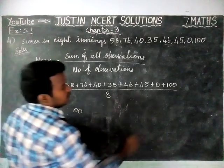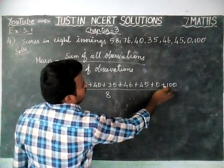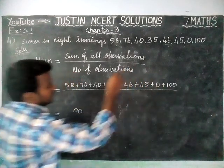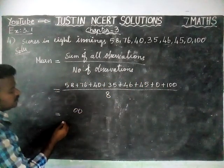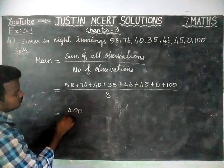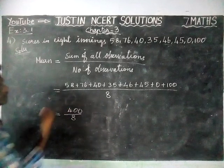Now in the hundreds place, we have only one value of 100, that is 1. We have a remaining carry of 3, so 3 plus 1 equals 4. Therefore, the total sum is 400, divided by 8.